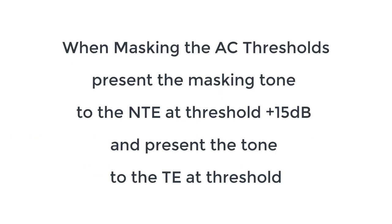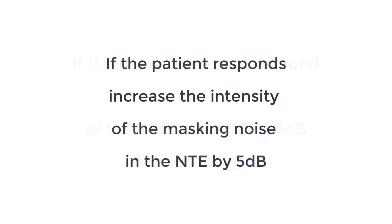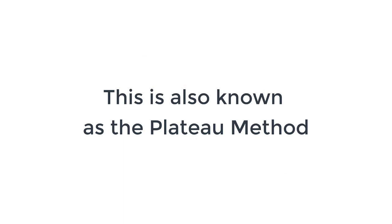When masking the air conduction thresholds, you want to present the masking tone to the non-test ear at threshold plus 15 decibels and present the tone to the test ear at threshold. If the patient does not respond, increase the intensity of the tone in the test ear by 5 decibels and present again. If the patient responds, increase the intensity of the masking noise in the non-test ear by 5 decibels. Repeat the process until the patient responds at the same tone intensity level while increasing the masking noise by 5 decibels three times in a row.